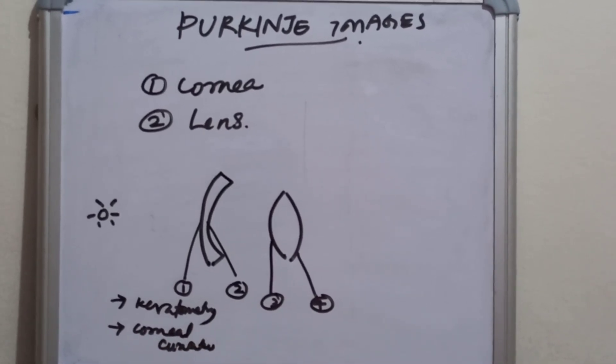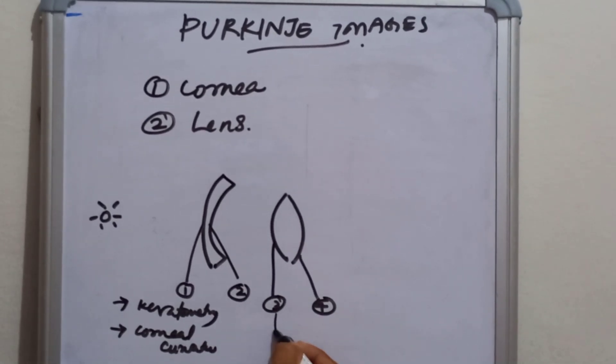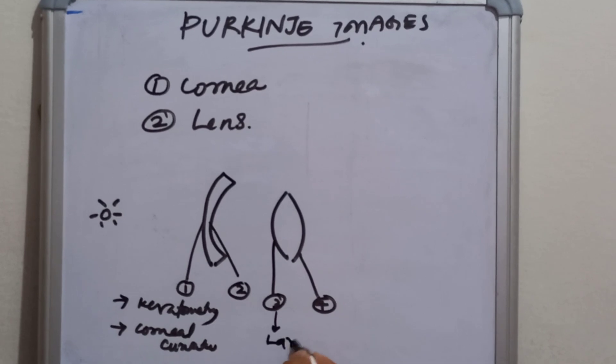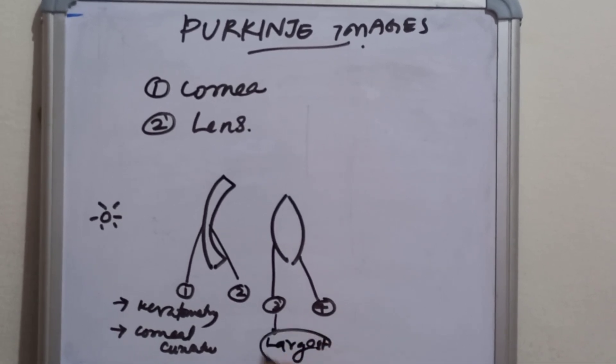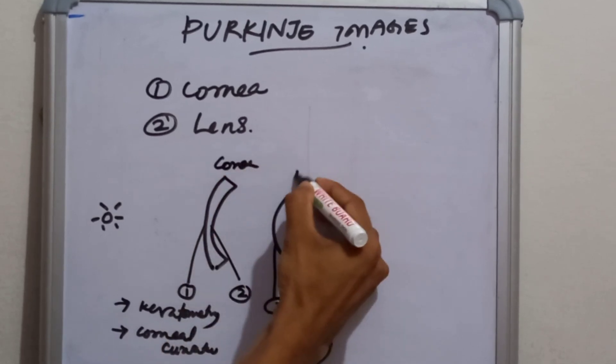And the third one is the largest Purkinje image. This is the cornea. And this is the lens.